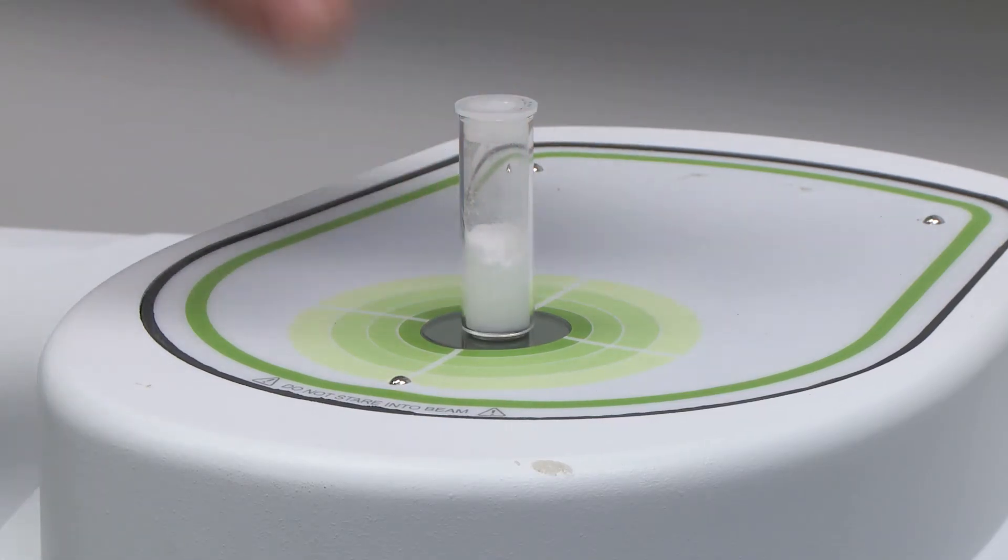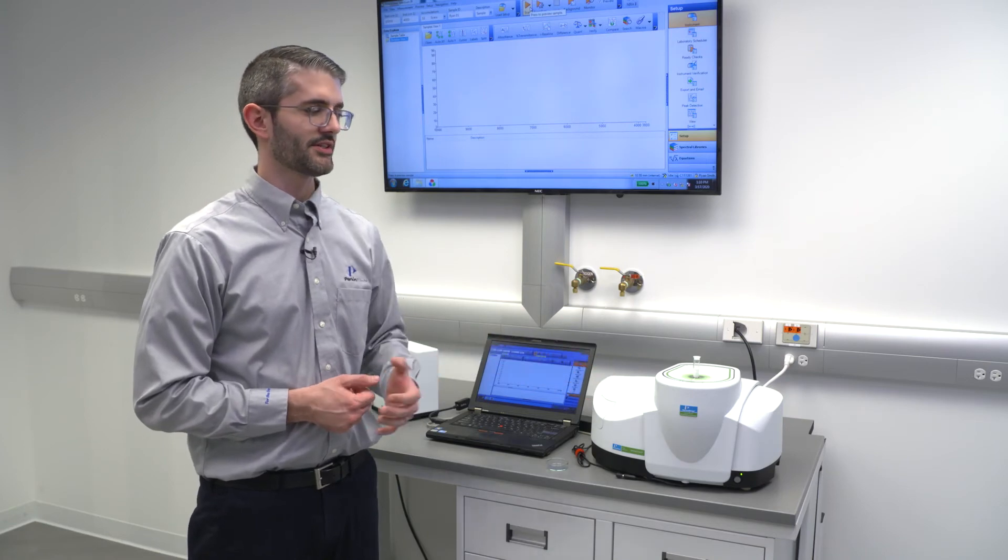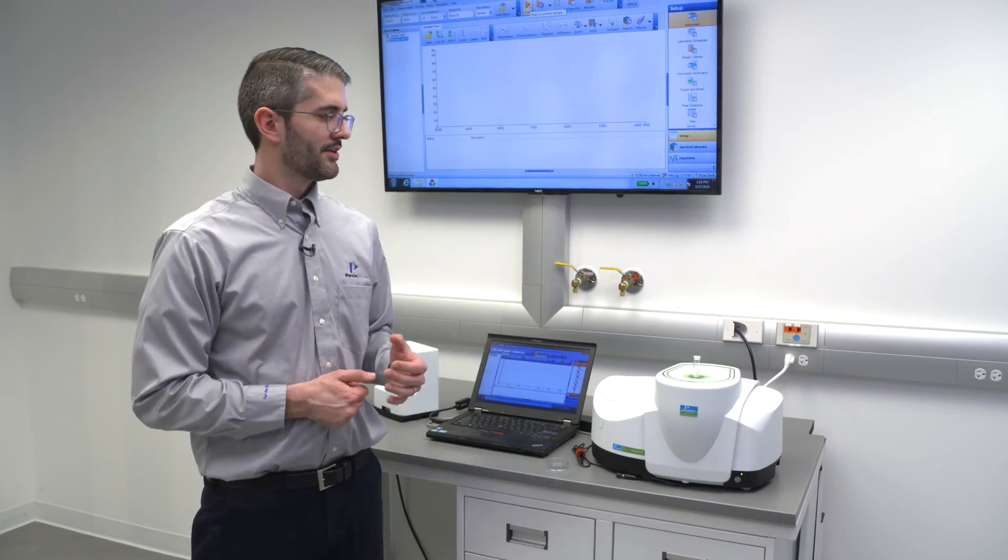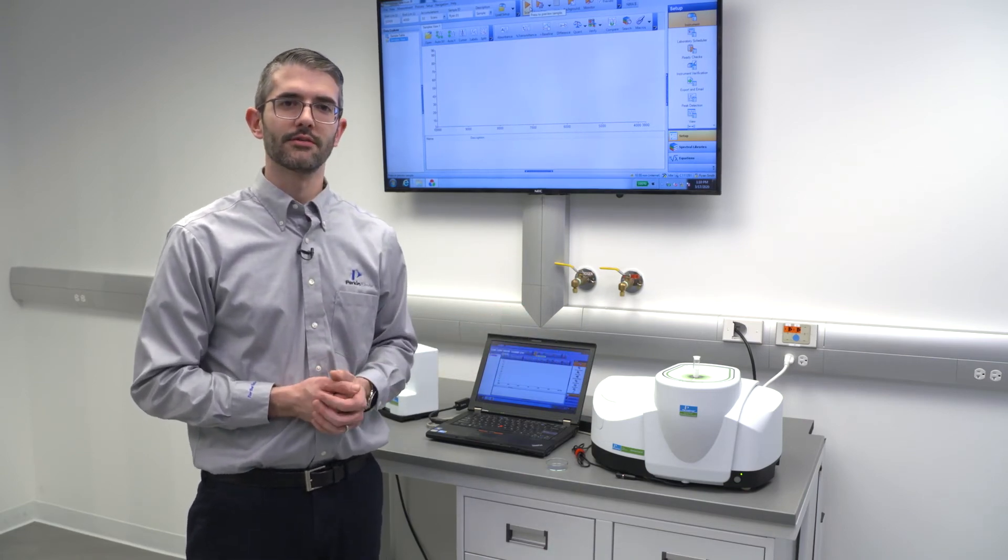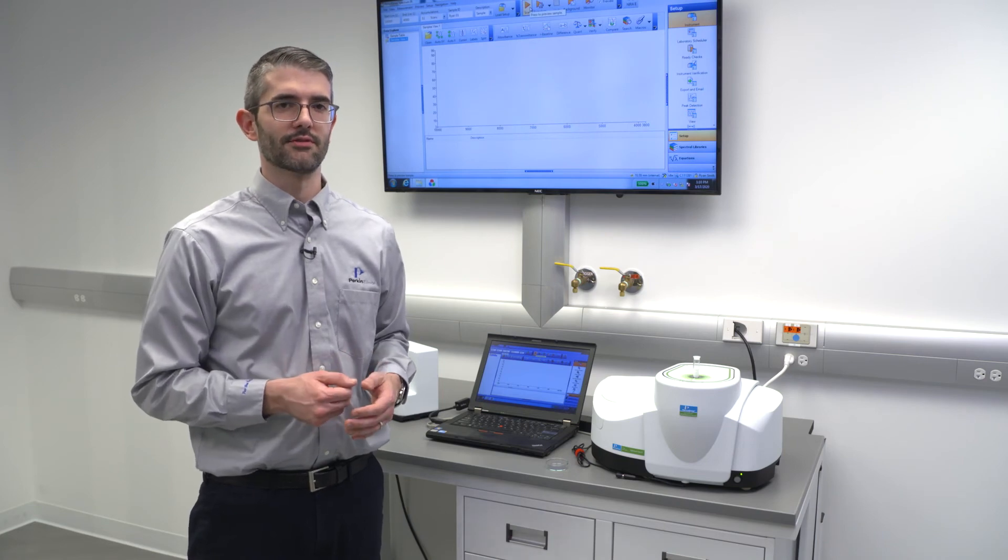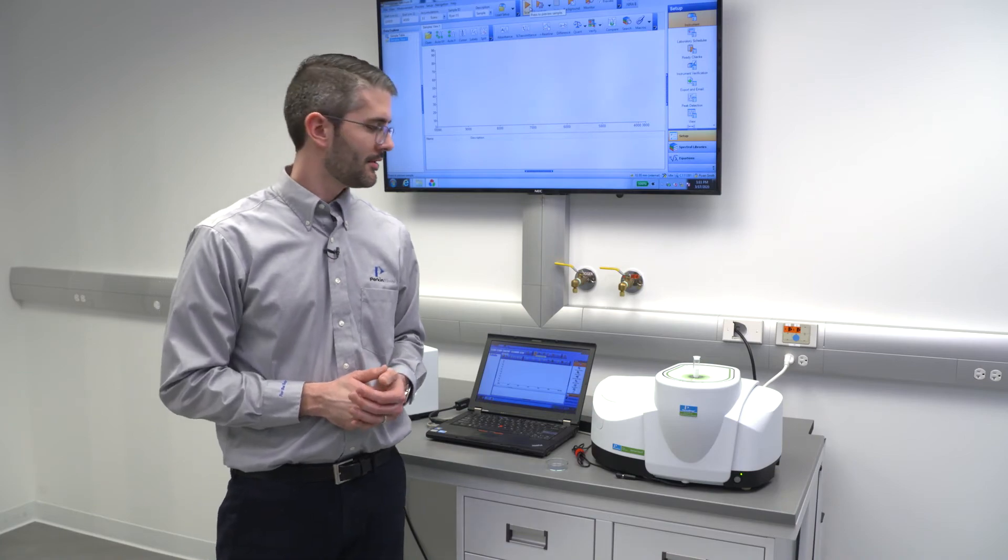For sample measurement, the sample can be placed on the optical port. As with other FT-IR measurements, the measurement occurs in two distinct steps: the first step being a background measurement, the second step being the sample measurement. When employing the NIRM diffuse reflectance accessory, this measurement occurs back-to-back automatically. The system performs the background measurement using an internal reference material, and then diverts the near-infrared beam towards the upper optical port on the accessory, allowing measurement of the sample. Let's try this out.